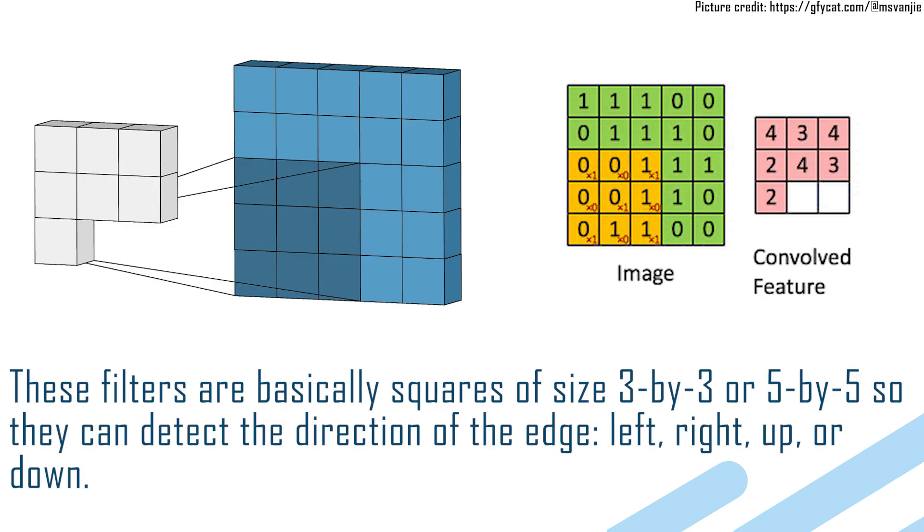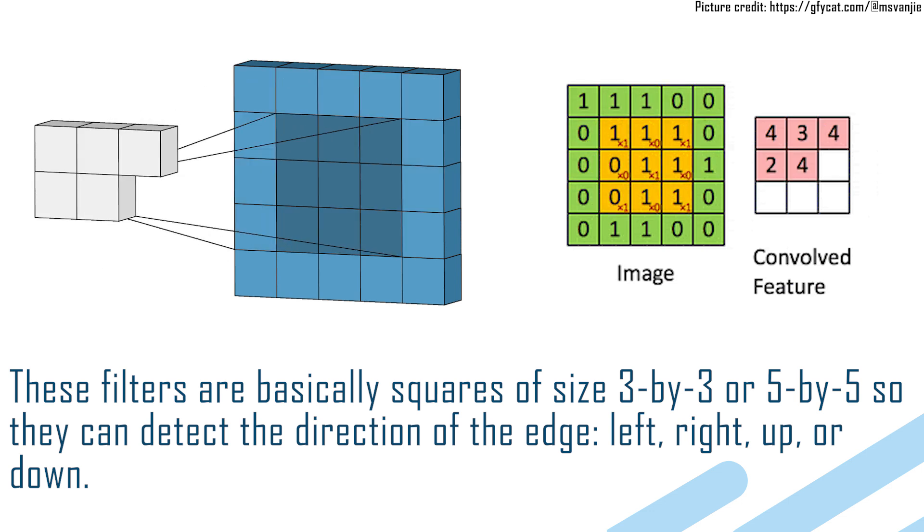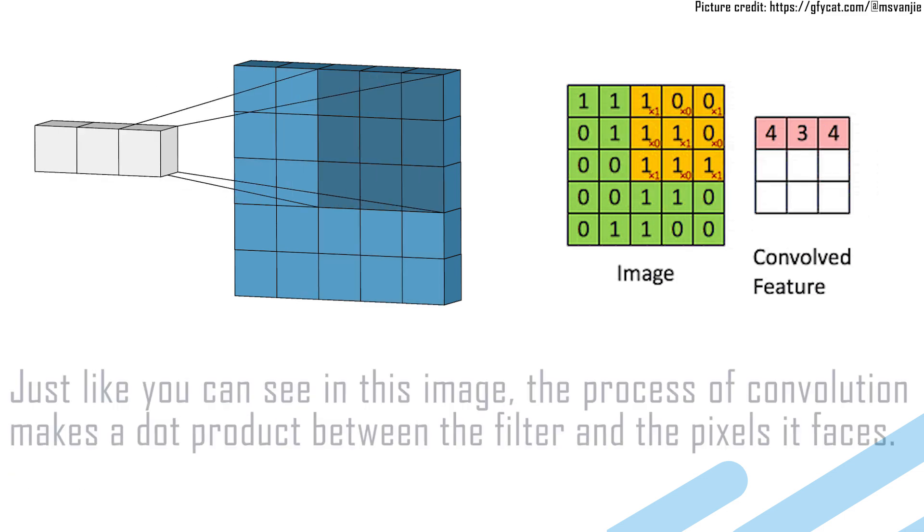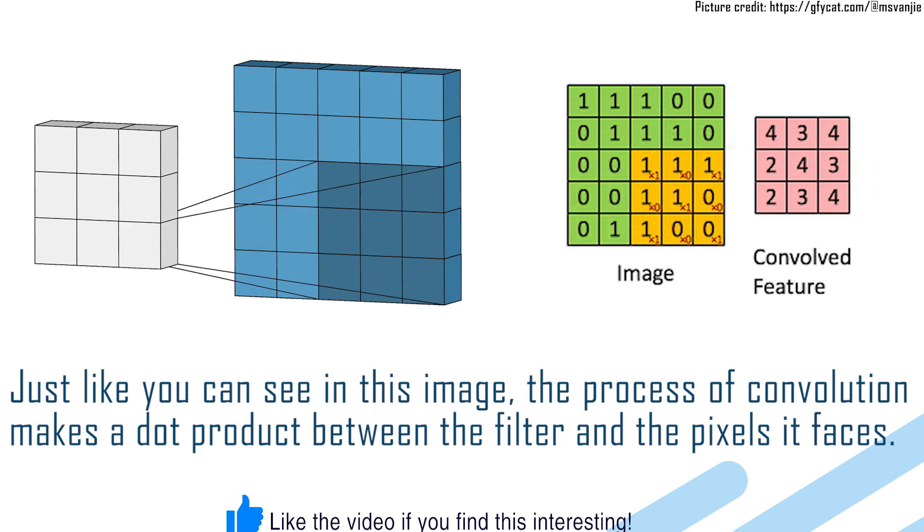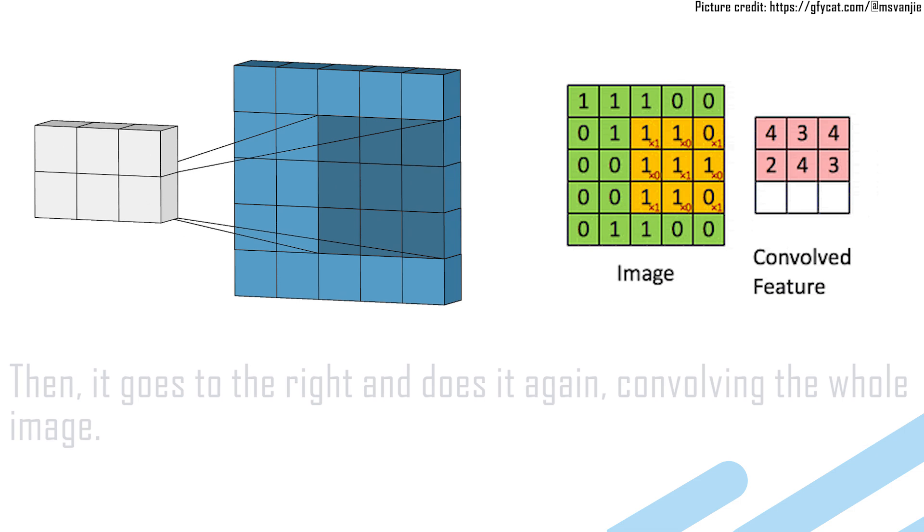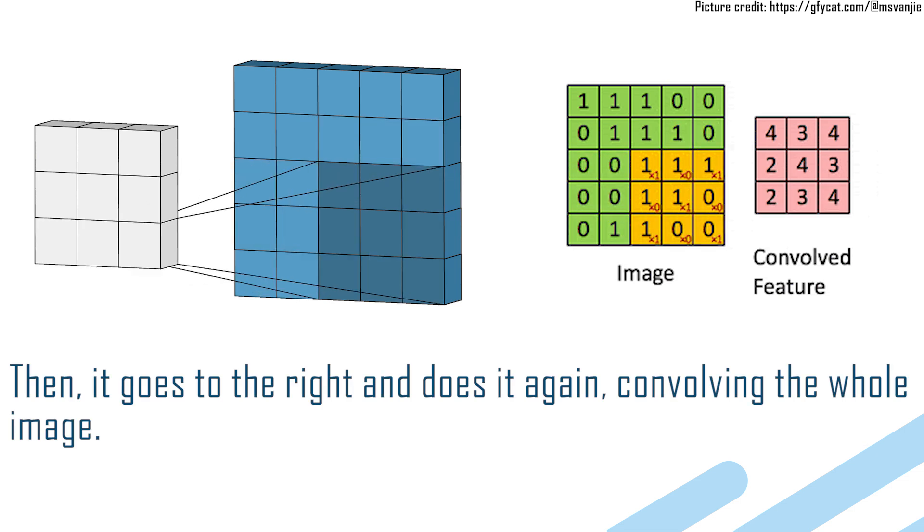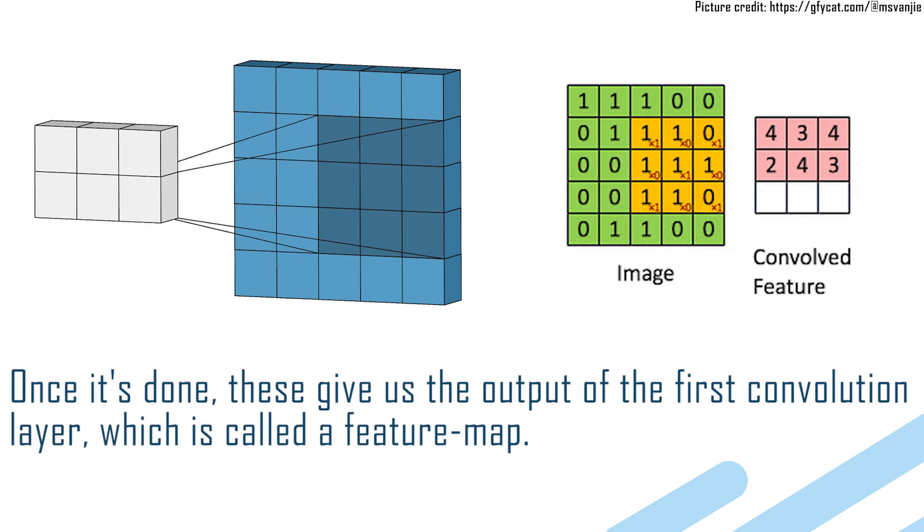These filters are basically squares of size 3x3 or 5x5, so they can detect the direction of the edge: left, right, up, or down. Just like you can see in this image, the process of convolution makes a dot product between the filter and the pixels it faces. Then it goes to the right and does it again, convolving the whole image. Once it's done, these give us the output of the first convolution layer, which is called a feature map.